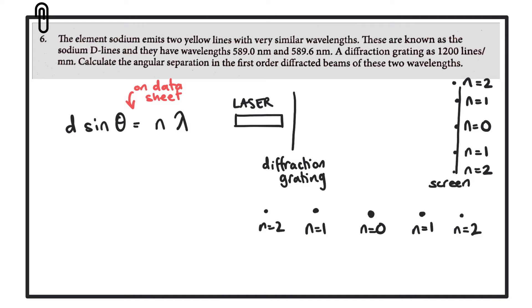What we're being asked to find is the angular separation between the first order diffracted beams of these two wavelengths, which means we need to find the angle between the first order for the first wavelength, which would be given as theta. Then we can work out the angle for the second wavelength, and once we have those two angles we can subtract them to find the difference.